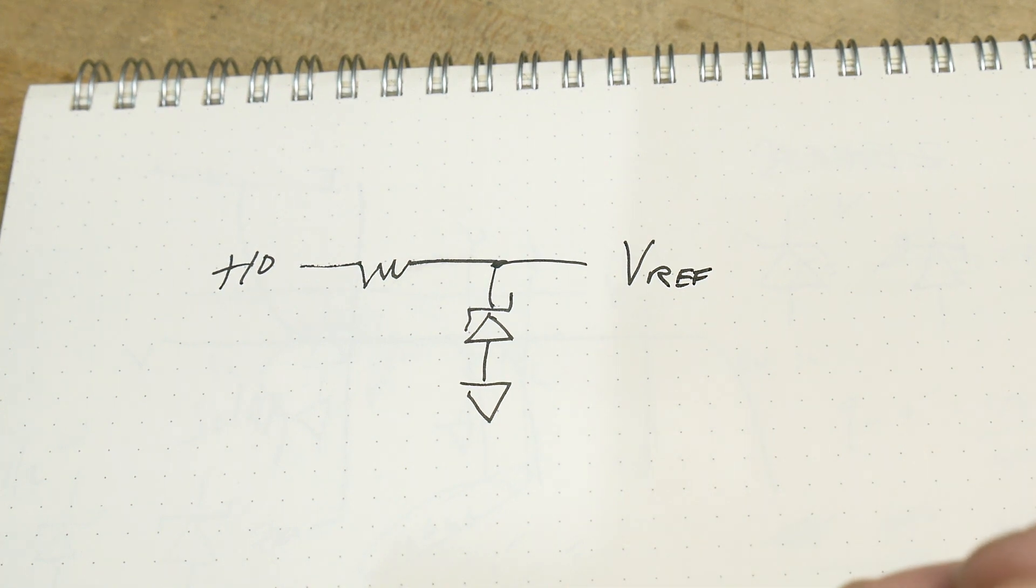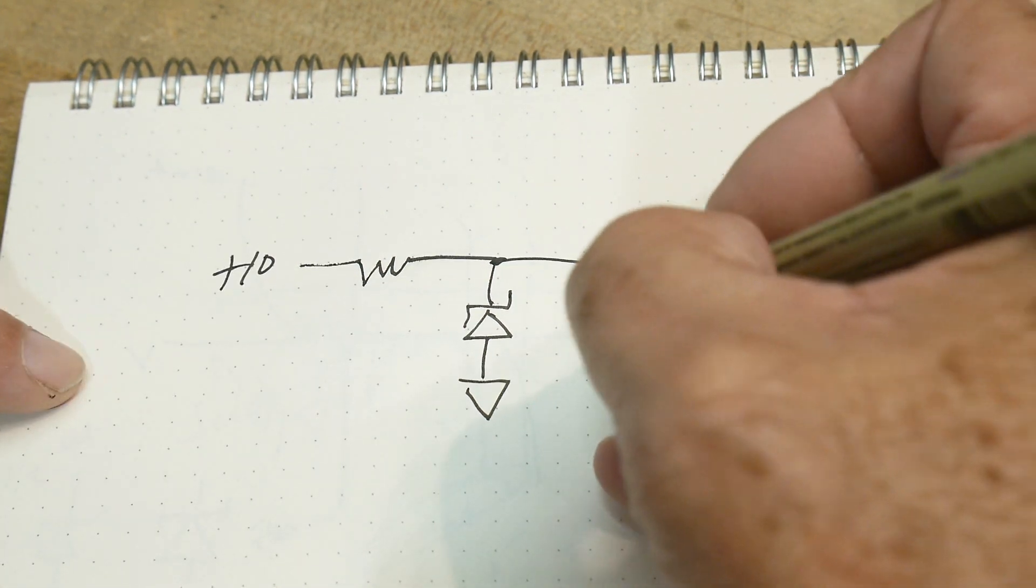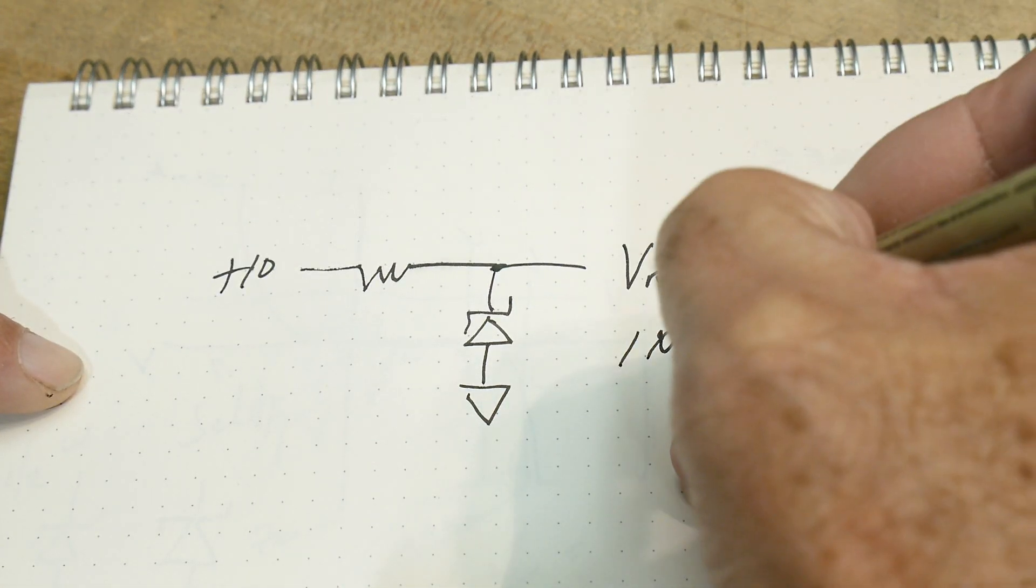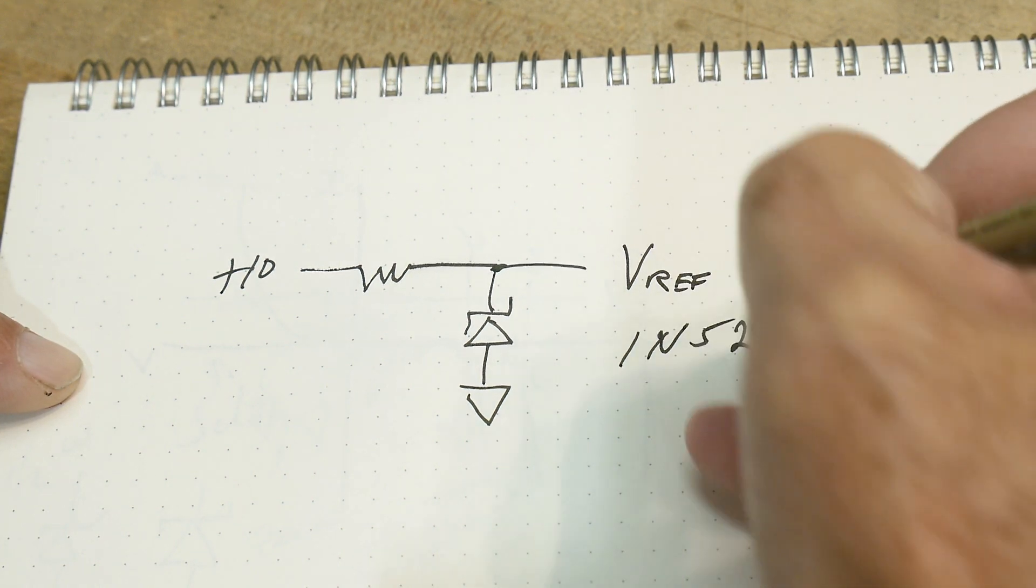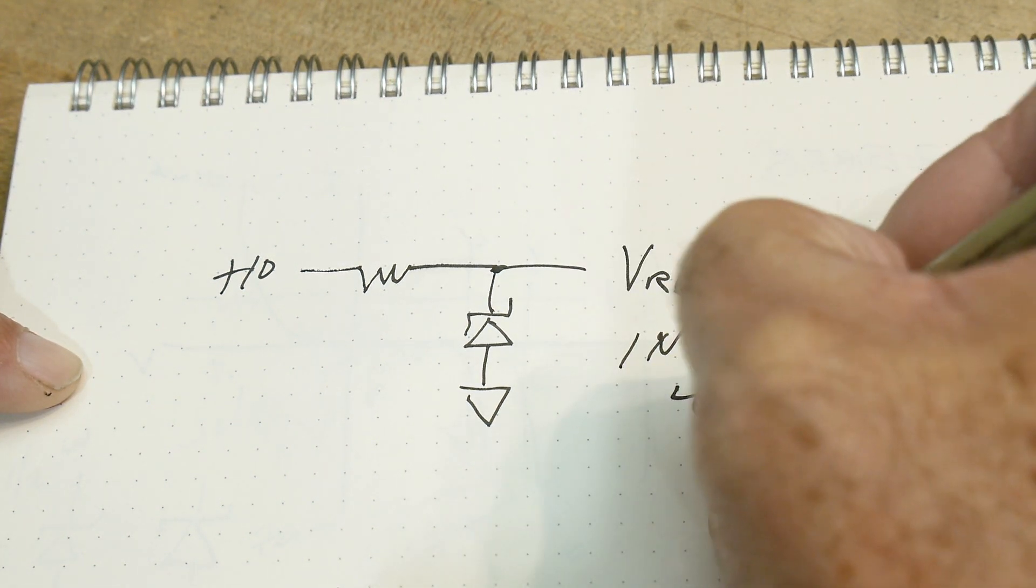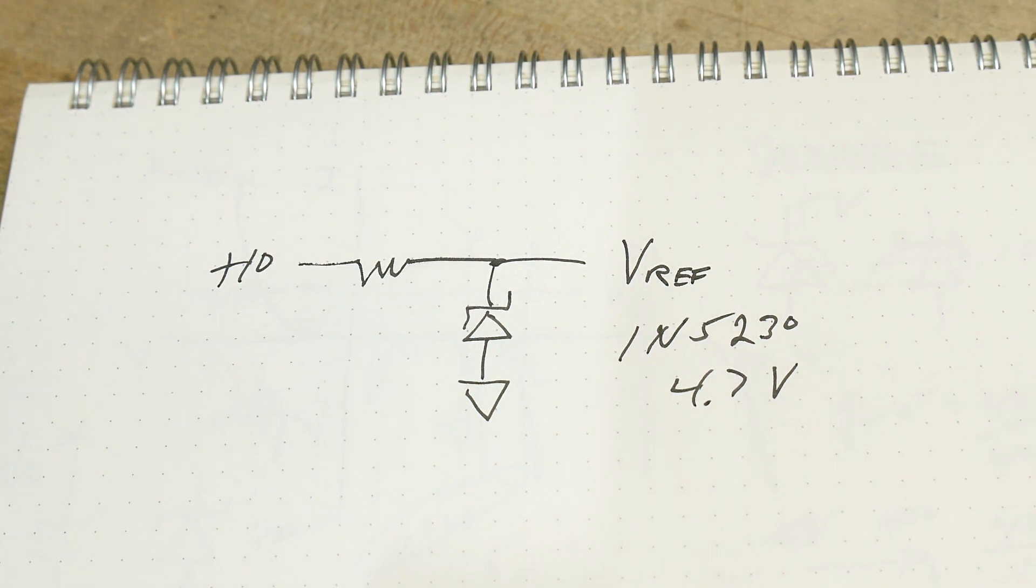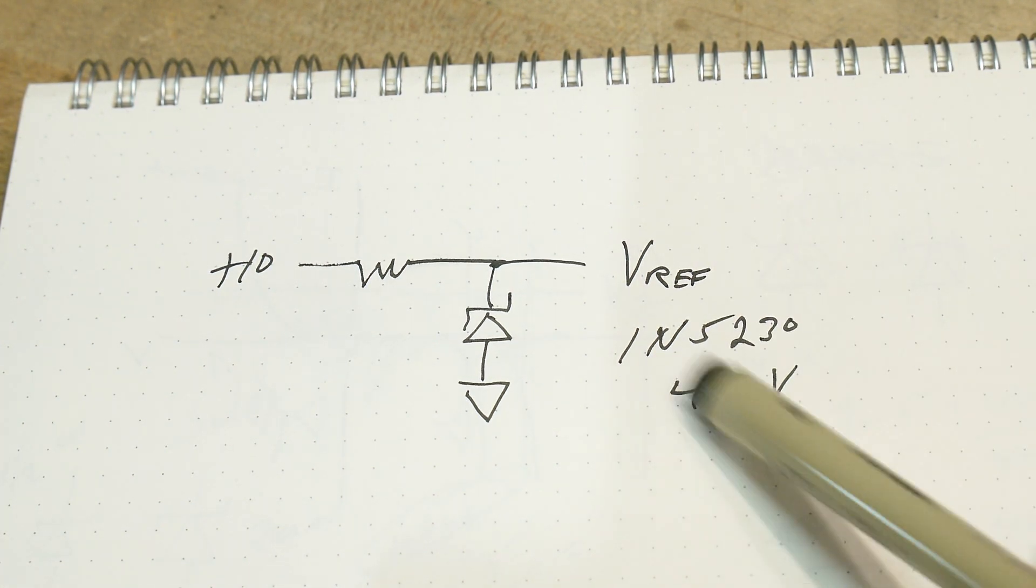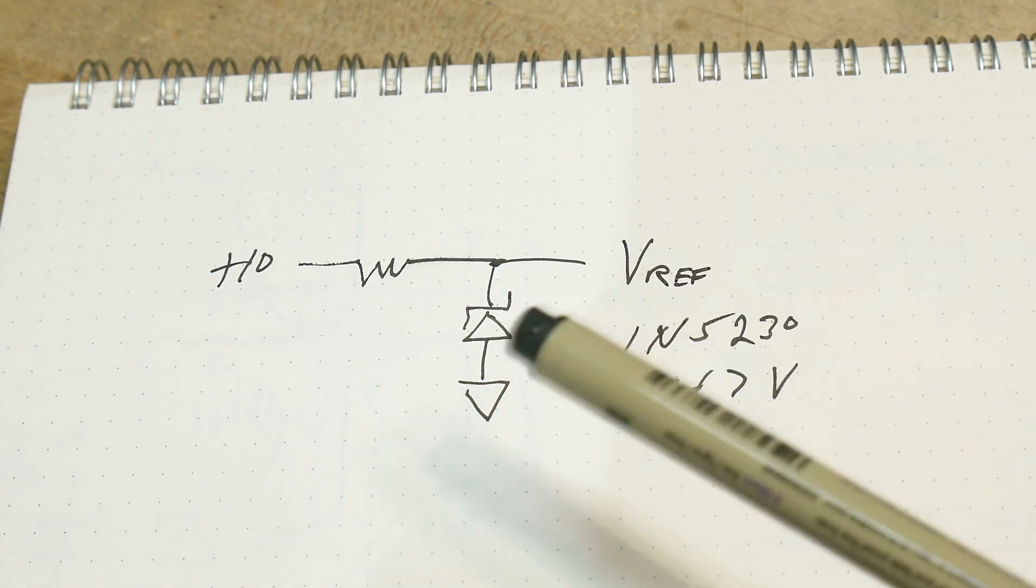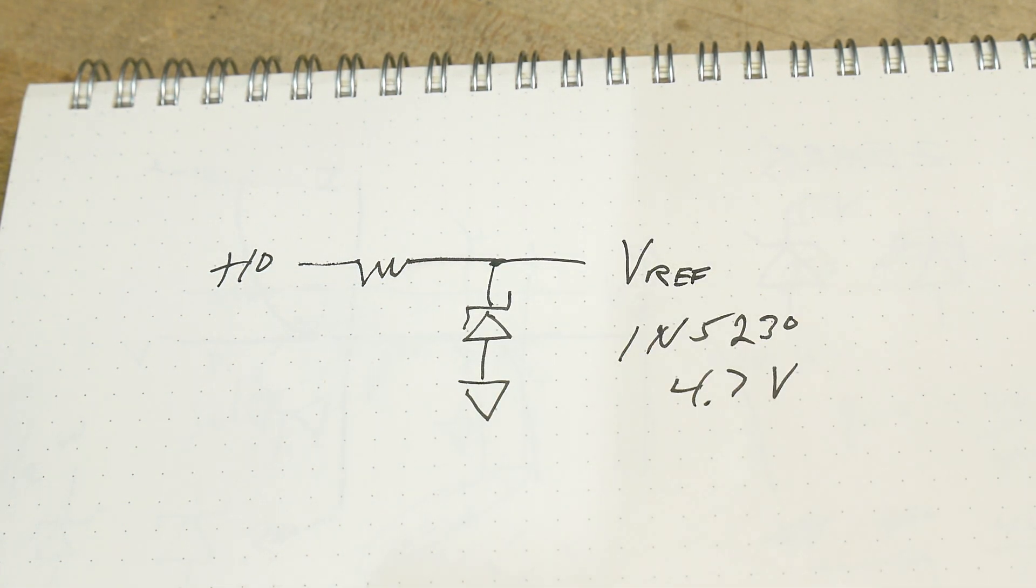Okay, so in this particular case, we're going to be using a 1N5230, which is a 4.7-volt Zener. All right. And no, these aren't very, very accurate. It's going to be around 4.7, but it's going to be around that ballpark.